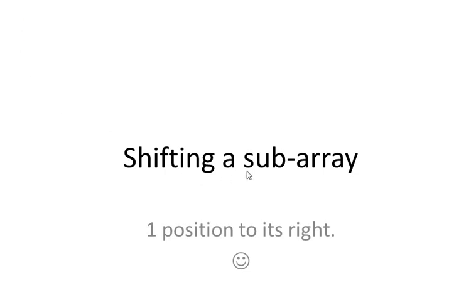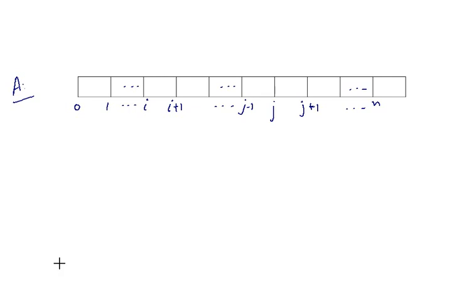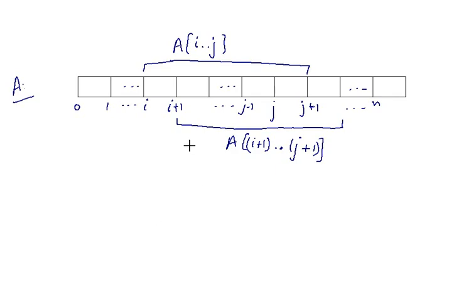We will see how to shift a sub-array one position to its right. So we are given this array A from zero to n and two sub-arrays: A[i..j] and A[i+1..j+1].